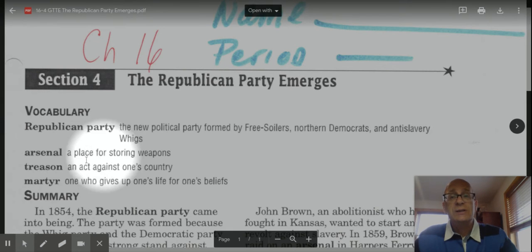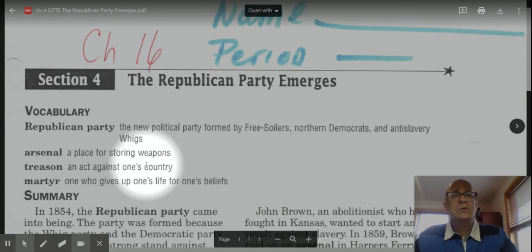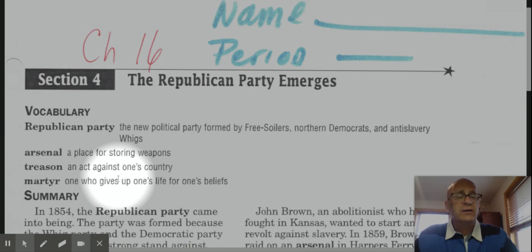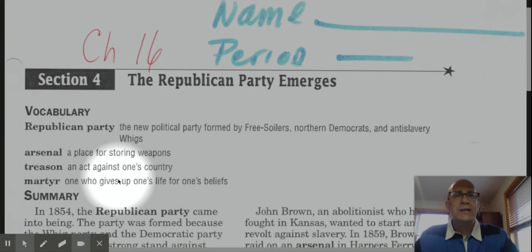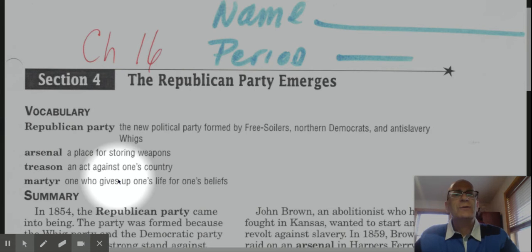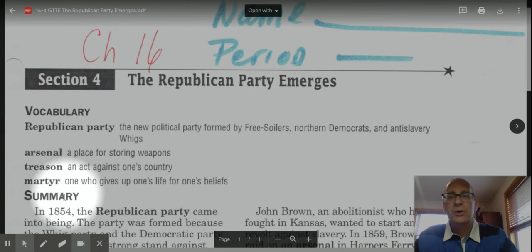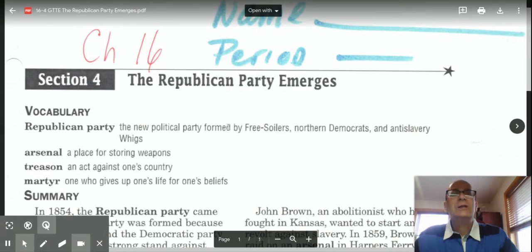So an arsenal is a place for storing weapons. Treason is another term we'll need to know for this section — treason is an act against one's country. And martyr is the fourth word today. A martyr is a person who gives up their life for their beliefs. Some very important historical martyrs: Jesus Christ, Martin Luther King, Joan of Arc — anyone who dies for their beliefs, anyone who is willing to die for their beliefs is called a martyr. And we're going to look at a very important martyr in this section as well.